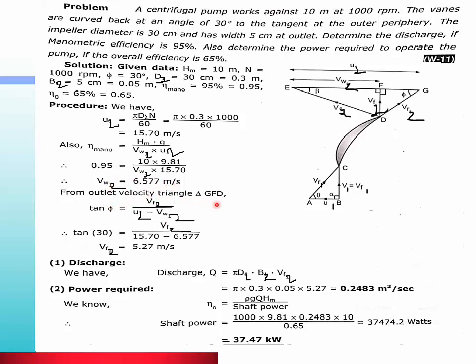From outlet velocity triangle GFD, we have tan θ₂ equals opposite upon adjacent. Opposite is VF₂ and adjacent is U₂ minus VW₂. So VF₂ divided by (U₂ - VW₂), tan 30 equals VF₂/(15.70 - 6.57). So VF₂ = 5.27 meters per second.